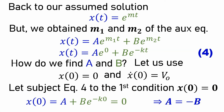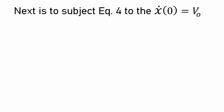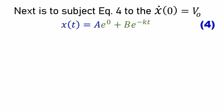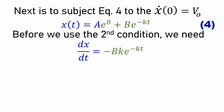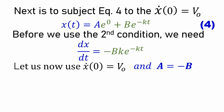Now we use the second condition: x'(0) = v₀, where v₀ is the initial speed of the object thrown horizontally experiencing air resistance. We differentiate equation 4: differentiating A·e^(0) gives 0, and differentiating B·e^(−kt) gives −Bk·e^(−kt). At t = 0, this gives us −Bk·e^(0) = v₀.